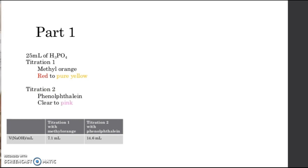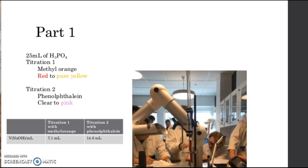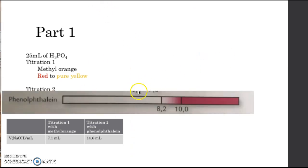In titration 2 we will add a couple of drops of the pH indicator phenolphthalein. As can be seen on the flask, it goes from a clear and transparent solution to a pink solution. This color change will occur when the pH value of the solution goes to 8.2 to 10.